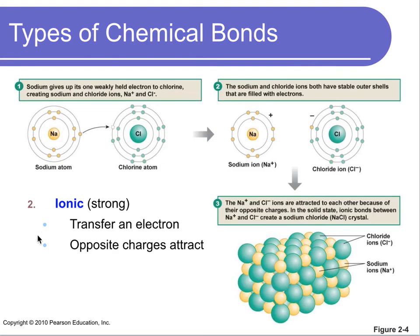Another type of bond used to create chemicals is the ionic bond, which is also very strong. In ionic bonds, an electron is transferred. Sodium gives an electron to chlorine — sodium loses an electron and becomes a cation, chlorine gains an electron and becomes an anion. Opposite charges attract, and that attraction is how you get sodium chloride.